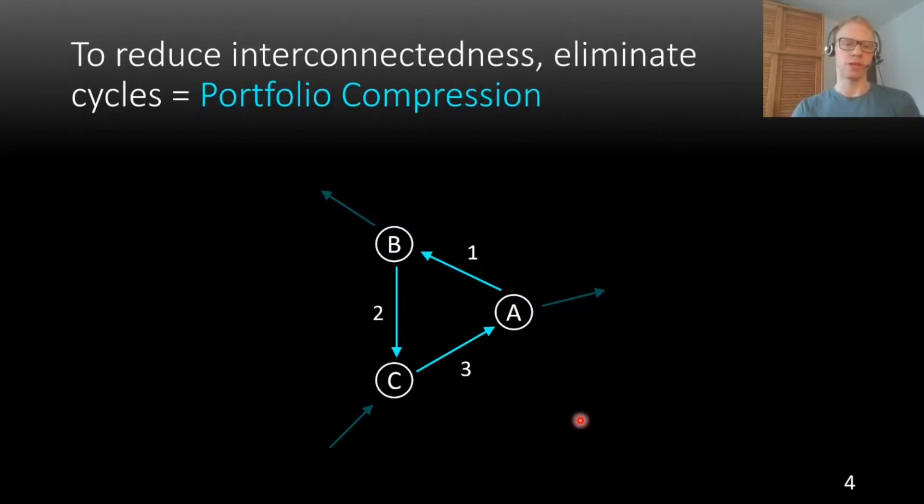How these contracts were created is not so important. What we do see here is that there is a cycle in the network, and this means that when these liabilities are paid, an amount of one will flow from A to B to C and back to A. So A receives its own money back. It may seem reasonable to just eliminate this amount of one upfront. This is what we call compression of the cycle A, B, C by an amount of one.